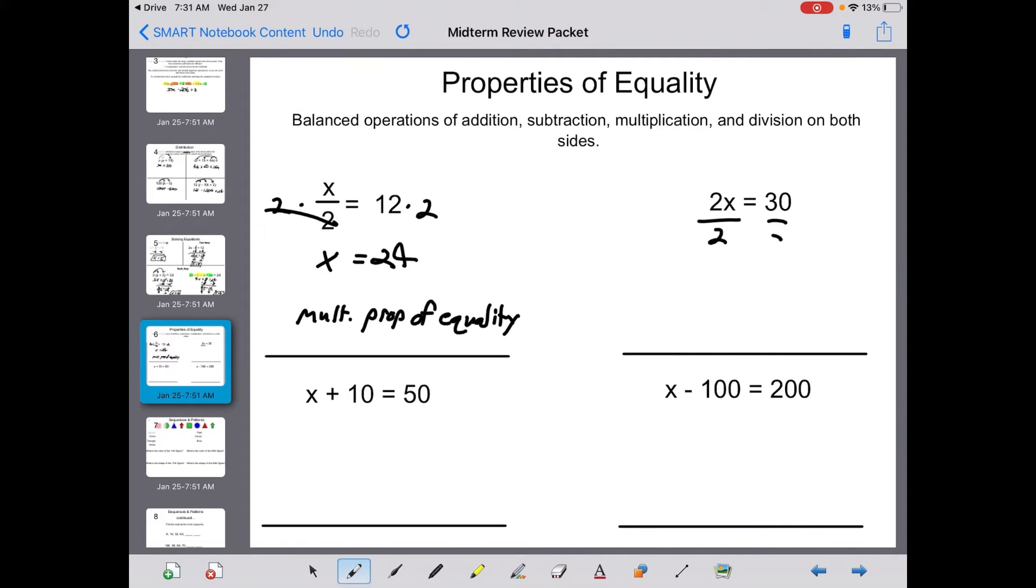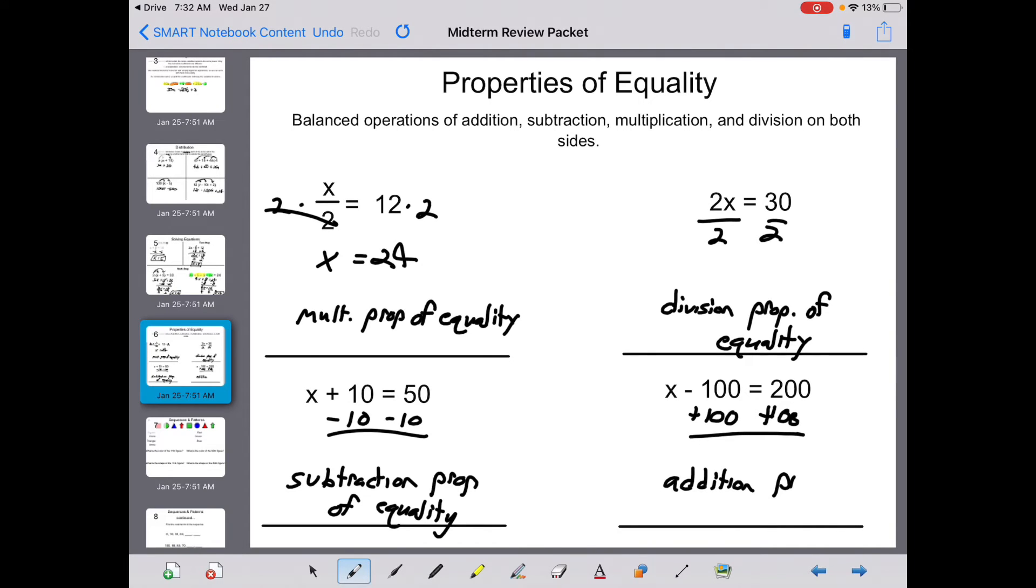For your next one, you'd have to divide by 2 on both sides. That's your division property of equality. Here, you have an x plus 10. You'd subtract on both sides. That's your subtraction property of equality. And here, you'd add by 100 on both sides. So that's your addition property of equality. There's going to be several multiple choice on these.